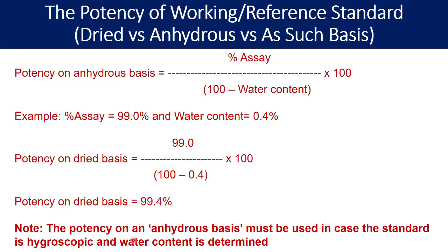The potency on an anhydrous basis must be used in case the standard is hygroscopic and water content is determined by Karl Fischer method. Anhydrous means you are identifying what is the water content, and if you remove it, the substance just becomes anhydrous. In case of loss on drying, you are not only considering water loss, but also loss due to residual solvents or volatile impurities present in the substance.